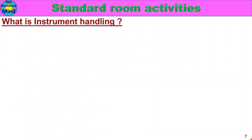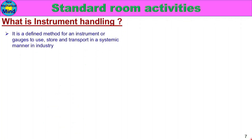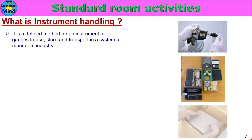What is Instrument Handling? It is a defined method for instruments or gauges — how to use, store, and transport them in a systematic manner in industry. Instruments are costly and require controlled atmospheric temperature and conditions. If an instrument is roughly or improperly handled, the instrument is damaged or its life is shortened.